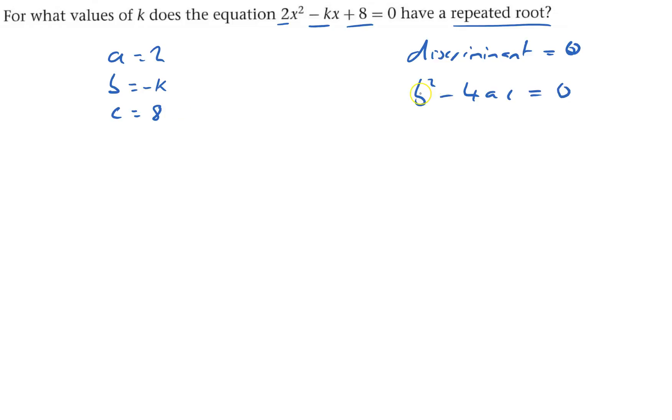And so the discriminant b squared - so negative k squared is negative k times negative k, which is k squared minus 4 times a is 2 times c is 8 - and that equals zero.